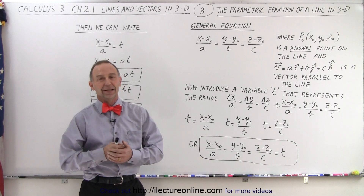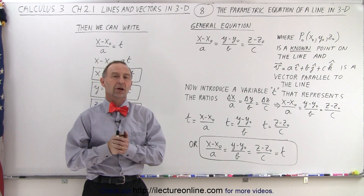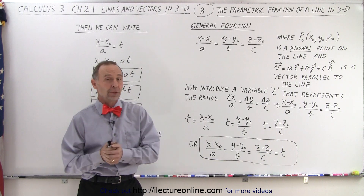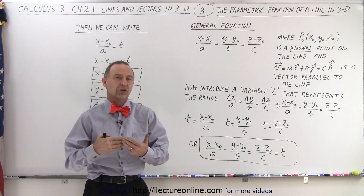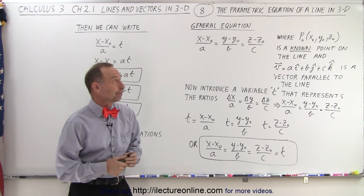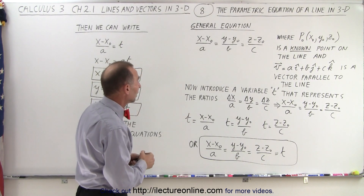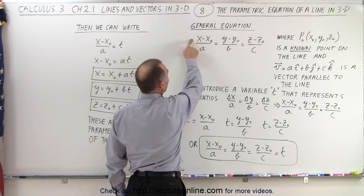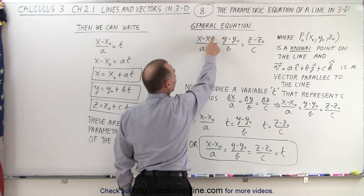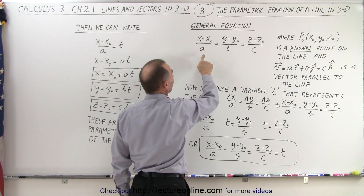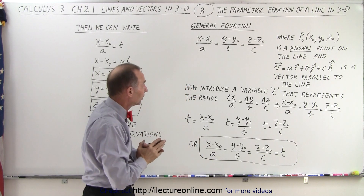Welcome to our lecture online. Now that we know the general equation of a line in three-dimensional space, how do we derive the parametric equations for that same line? Let's go back to writing the general equation. It's the difference in the x values between any point on the line and a given or known point on the line, divided by the x component of the parallel vector.